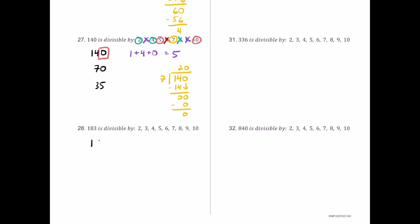For number 28, we have 183. It ends in 3, which is odd, so 2, 4, 8, 6, and 10 all fail. The digit sum 1 plus 8 plus 3 is 12, a multiple of 3 but not 9. The last digit is 3, not 5 or 0, so 5 fails. Dividing 183 by 7 gives a remainder of 1, so 7 also fails. Only 3 works for 183.